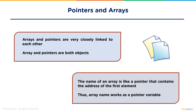Arrays and pointers are very closely related to each other. When an array gets declared, the compiler assigns a continuous block of memory so all elements can be stored. C++ treats the name of the array as a pointer that contains the address of the first element, known as the base address. So if we want to assign the address of the first element to a variable x, instead of writing x = &arr[0], we can simply write the name of the array.